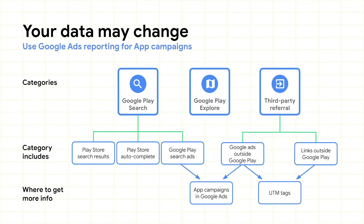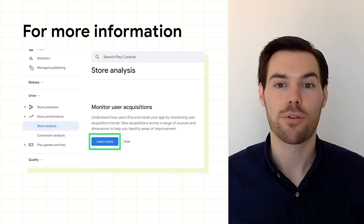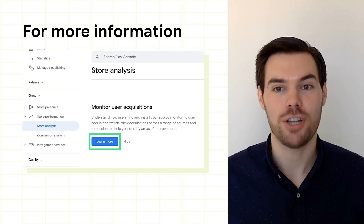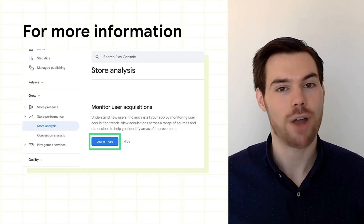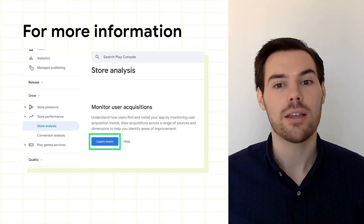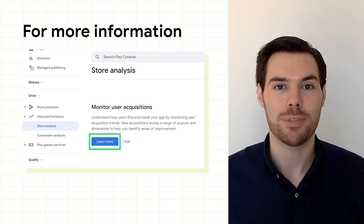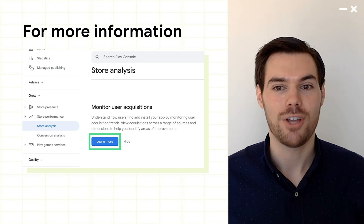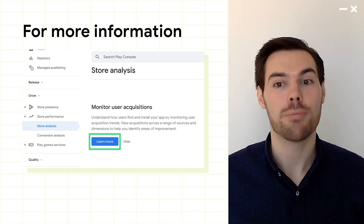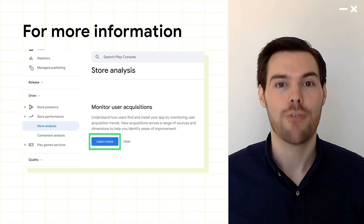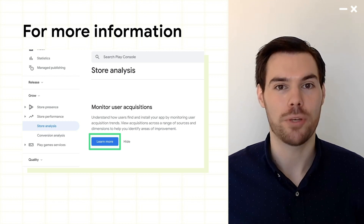Even though we no longer break out Google Ads traffic, you can still view the performance of your app campaigns directly in Google Ads. For more information about the changes to metric and traffic source definitions, click the link in the video description to visit our Help Center article. You can also click the Learn More button in Play Console for more useful resources.